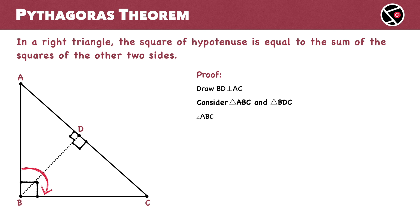Angle ABC equals angle BDC. Both are 90 degrees. This is equation number 1.